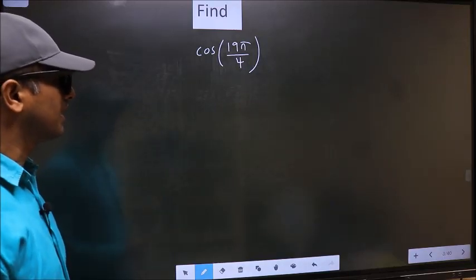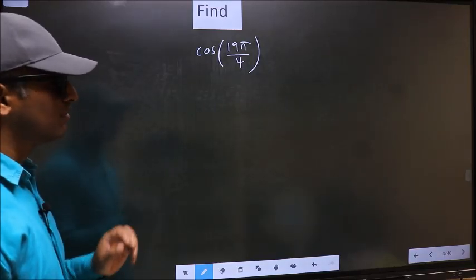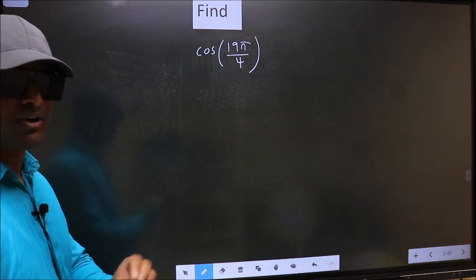Find cos(19π/4). To find this, we should follow this method.